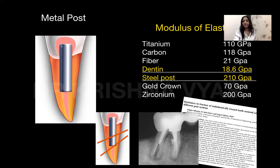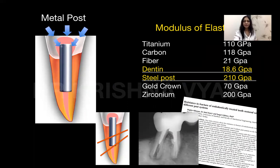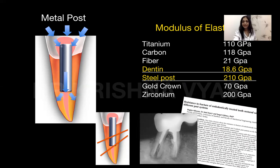On top of that, when we do the post-endodontic core — especially if it is a metal post, which has a modulus of elasticity almost 10 times more than natural dentin — whenever loads are present, stress concentration takes place at the apex. This leads to a wedging effect, and because of this, the root can fracture.